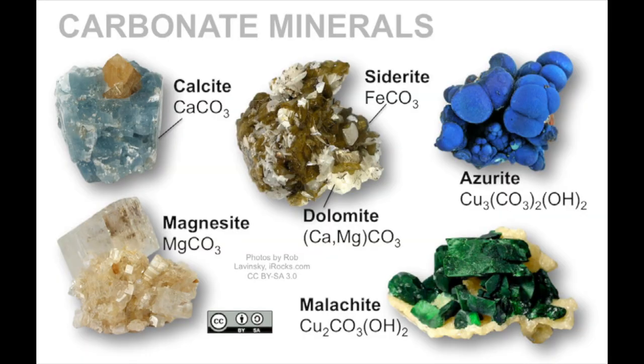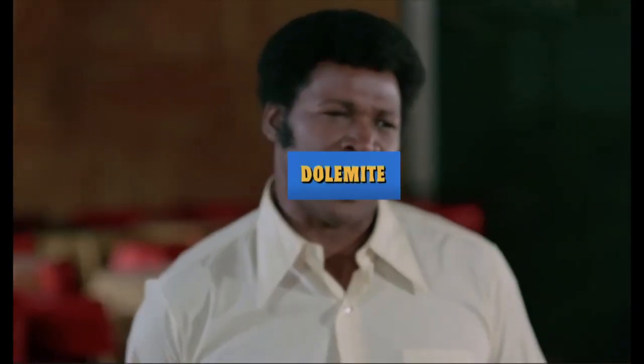All minerals that have a CO3 ionic group are called carbonates, and rocks that are made mostly of these minerals are also called carbonates. The main carbonate rocks are limestone, made of calcite, and dolostone or dolomite — made of the mineral dolomite, a calcium-magnesium-rich carbonate.